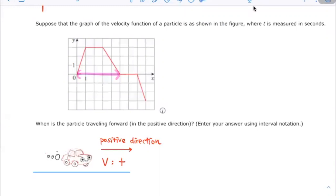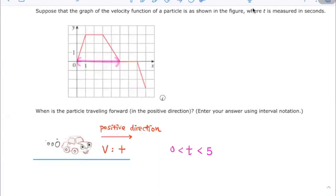So we see that velocity is positive when t is greater than 0 and less than 5. Using interval notation, that is when t is in this open interval from 0 to 5.